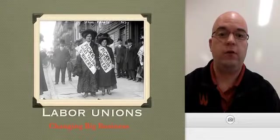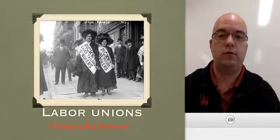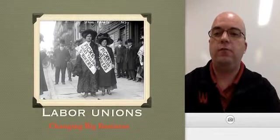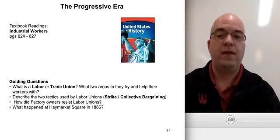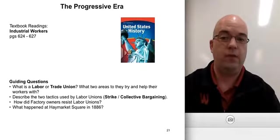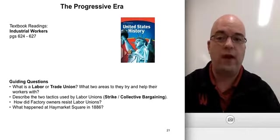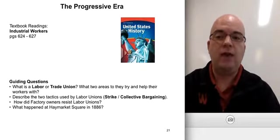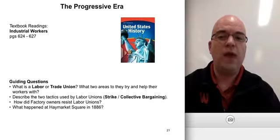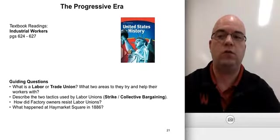Hello and welcome to another video lecture for Mr. Moser's 8th grade U.S. history class. The purpose of today's lecture is to look at labor unions changing big business. The textbook readings come from pages 624 to 627, and the title of that section is 'The Industrial Workers.' Our guiding questions today are: what is a labor or trade union, what two areas do they help workers, what tactics do they use such as striking and collective bargaining, how did factory owners resist unions, and what happened at Haymarket Square in 1886?